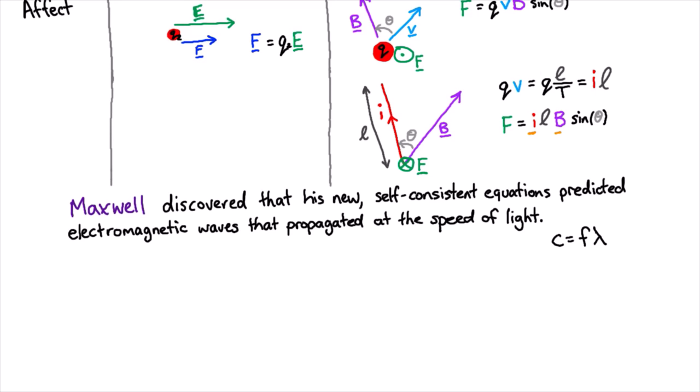Remember that the speed is related to the frequency and the wavelength in a very simple way. The speed of all electromagnetic waves is the speed of light, but they can have any frequency, and then once you know the frequency you get a wavelength or vice versa.